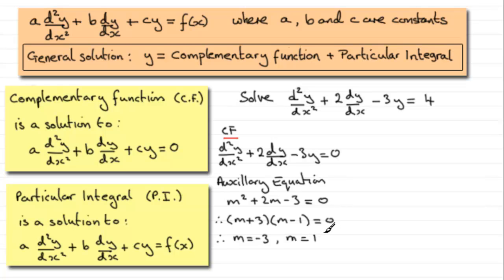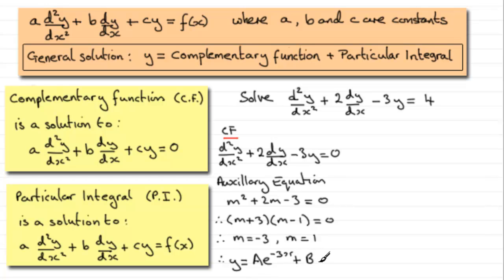As shown in the earlier video, if we have real and different roots the general solution takes the form y = A·e^(−3x) + B·e^(x). This is our complementary function.